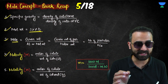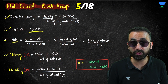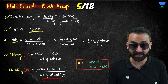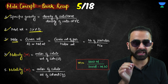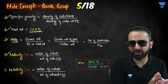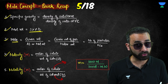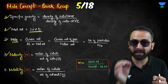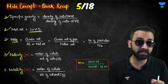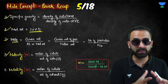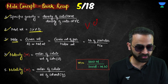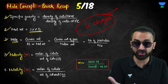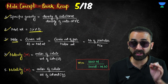Molality, denoted by small m, is the moles of solute divided by the weight of solvent in kilograms — not solution, solvent. Molality is temperature independent because changing temperature neither changes the moles nor the weight of the solvent. However, molarity and any concentration term that depends on volume will change with temperature, since things expand and volume changes as temperature changes.